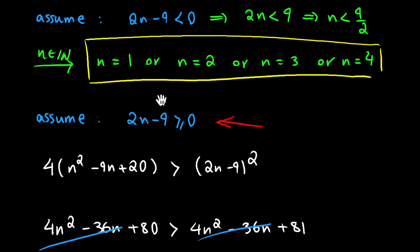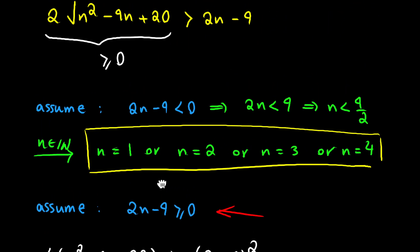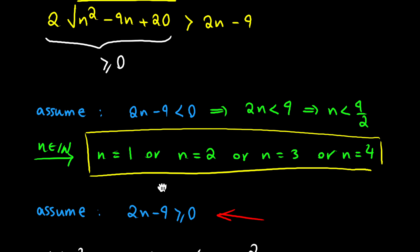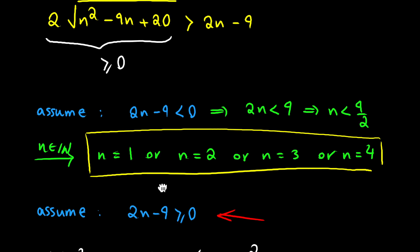This contradiction comes from our assumption, so the right hand side of our inequality cannot be non-negative — it must be negative. Therefore, n equals 1, n equals 2, n equals 3, and n equals 4 are the only natural number solutions to our inequality.